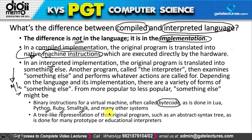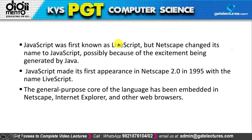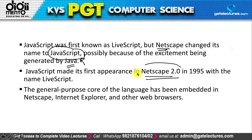Interpreters do not translate the entire program to machine language; they translate the program into something else that may not be machine instructions. JavaScript was first used by Netscape, which changed its name from LiveScript to JavaScript due to excitement around Java. JavaScript made its first appearance in Netscape 2.0 as a web browser in 1995.